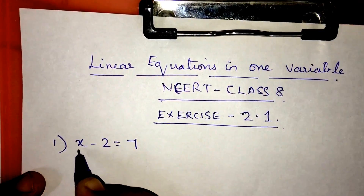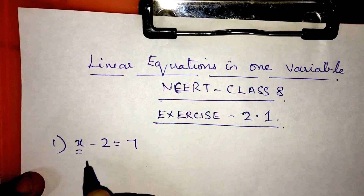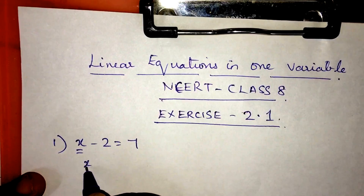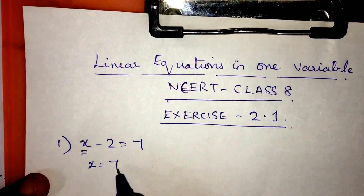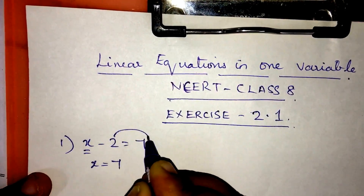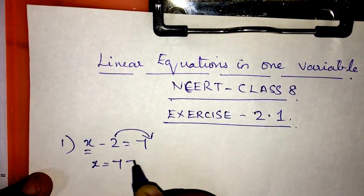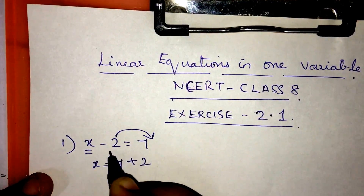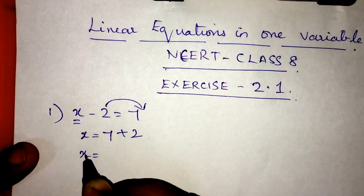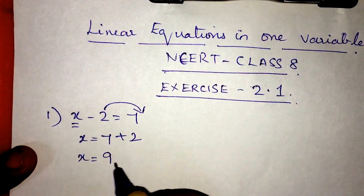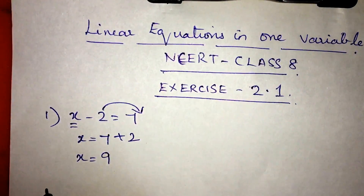We have the variable on the left hand side. The minus 2 goes to the right side and becomes plus 2. Therefore, the value of x will be 9.